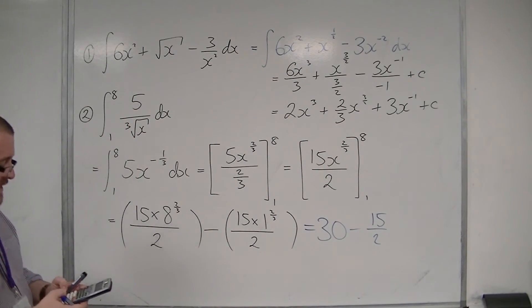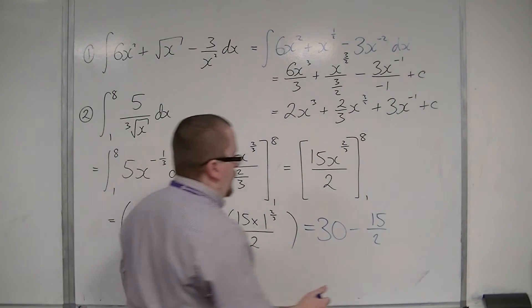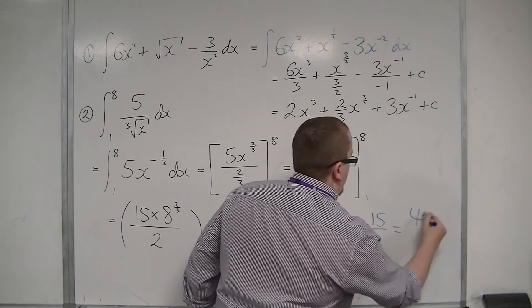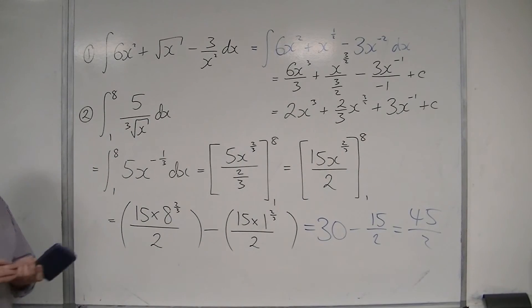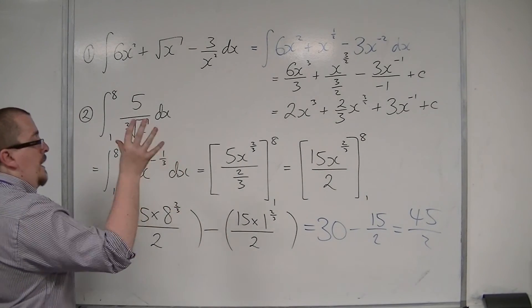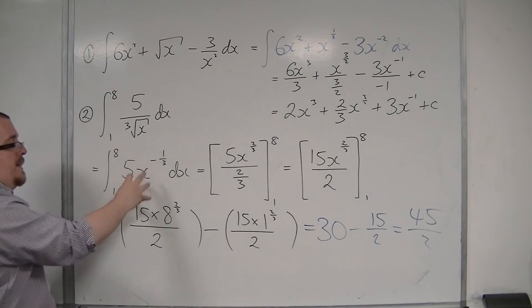And then finally, 30 take away 15 halves gets us 45 halves. So 45 over 2, or 22.5. And that is the evaluated integral here.